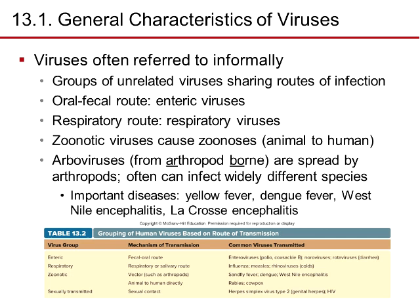Viruses are often referred to informally by groups of unrelated viruses sharing modes of infection. The oral-fecal route is for enteric viruses; the respiratory route for respiratory viruses; zoonotic viruses cause zoonosis, occurring in animals or humans. Arboviruses, spread by arthropods like mosquitoes and the tsetse fly, can infect widely different species. Important diseases caused by arboviruses include yellow fever, dengue fever, West Nile virus, and La Crosse encephalitis.